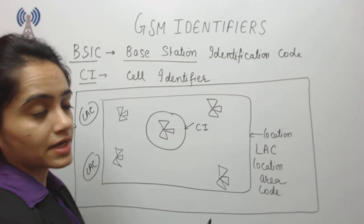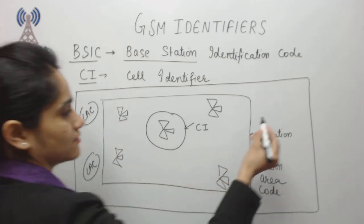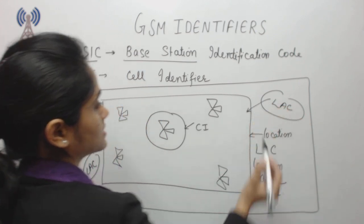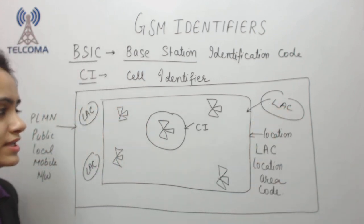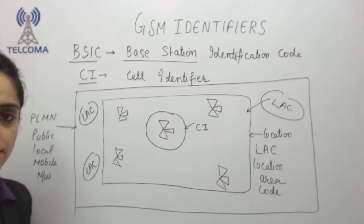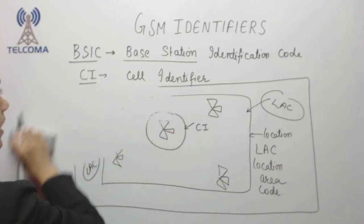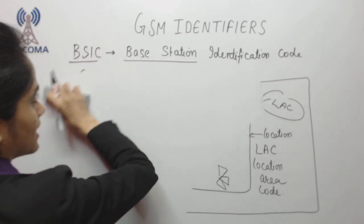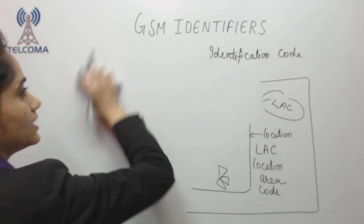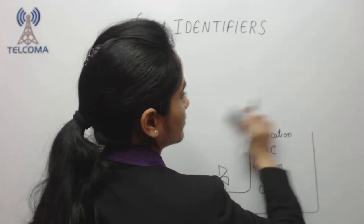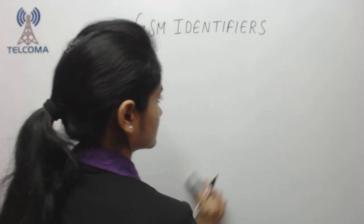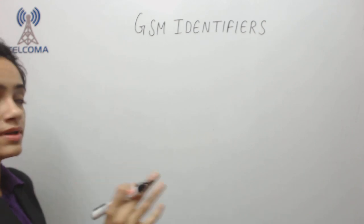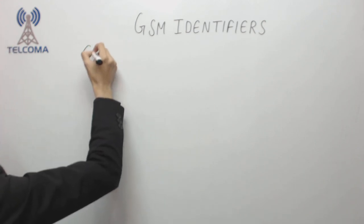The identifier is the Location Area Identifier. Within this location area code we have various cells, and this is the Cell Identifier. A cell has a unique ID which is global in nature. This global identifier or global identity of a cell we call CGI.